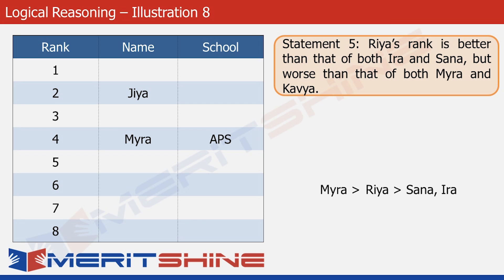Now just focus on Riya, Sana, and Ira. Since Myra is at rank 4 in the table, we can say that these three girls would be below Myra and would lie in the region from ranks 5 to 8. Yes, they have to. So let's keep it like that and move forward.